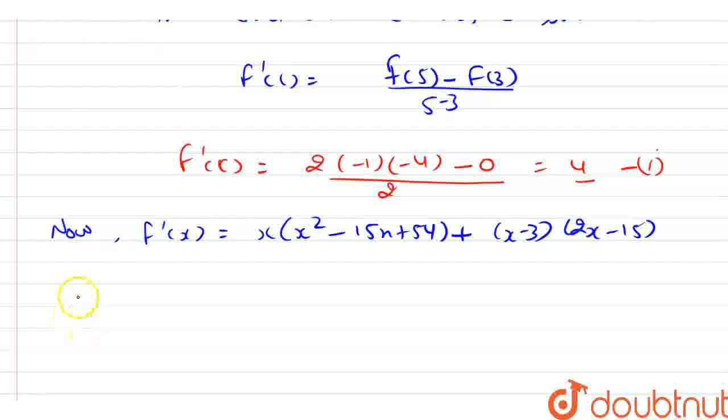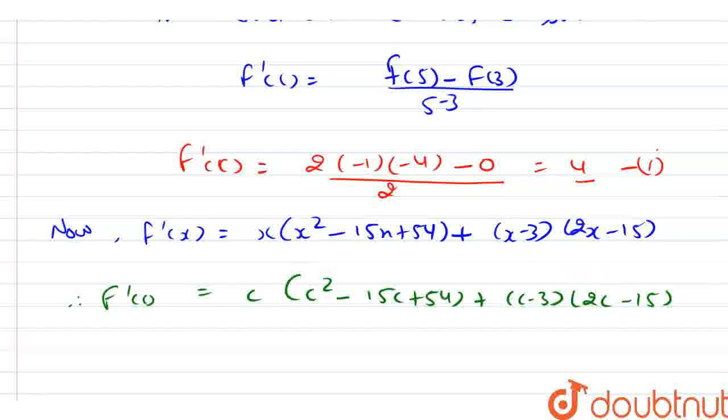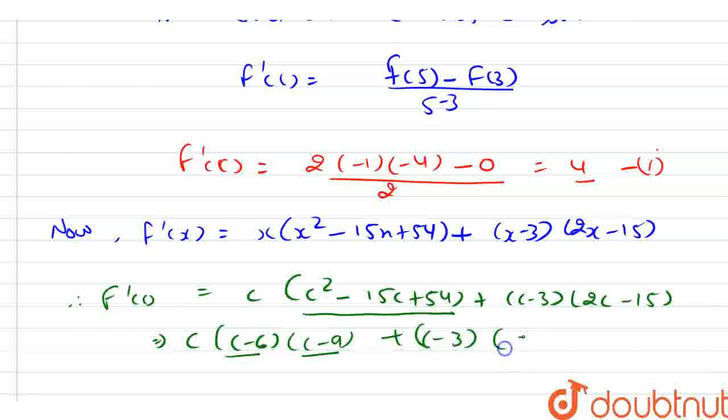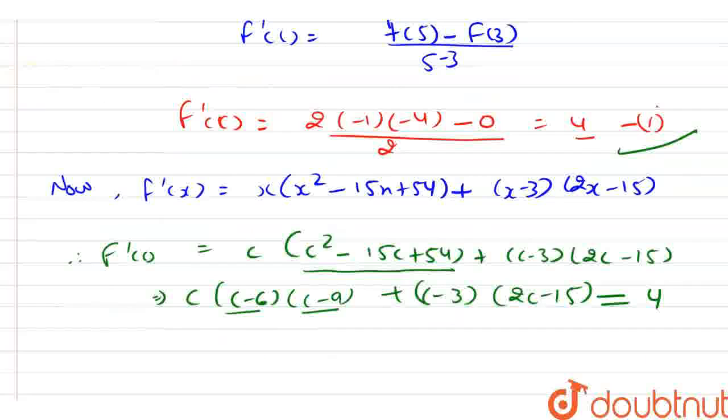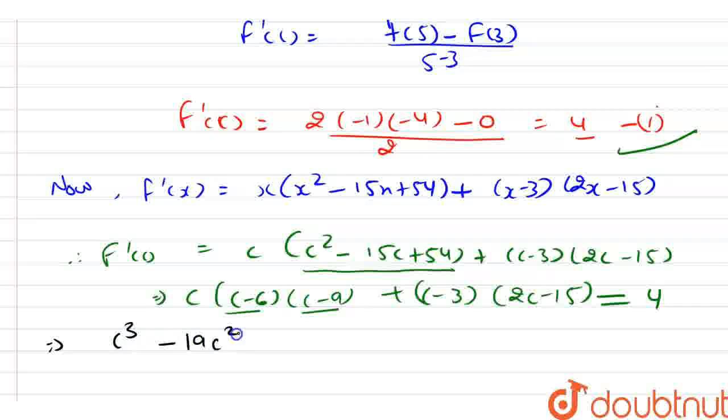Now, f'(c) = c(c² - 15c + 54) + (c - 3)(2c - 15). Now, from here after solving this quadratic equation, we have (c - 6)(c - 9) + (c - 3)(2c - 15), and this whole value equals 4 from point number 1. After solving it further, we have c³ - 19c² + 39c + 45 - 4 = 0.